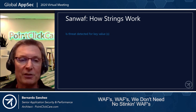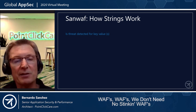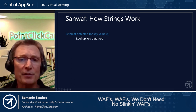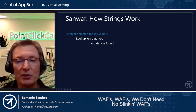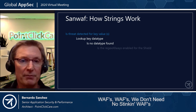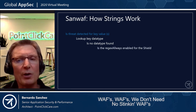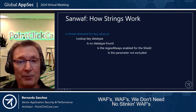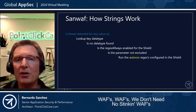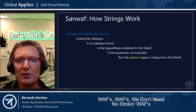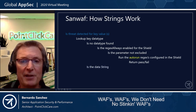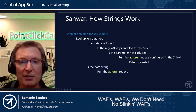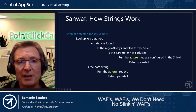For strings specifically: we look at the data type. If no data type is found for a non-secured parameter, cookie, or header, it checks whether regex is always enabled for this shield. If so, and you're not on the excluded list, it runs all auto-run regexes configured in the shield and returns pass/fail. If it is the string data type, it simply runs all auto-run regexes and returns pass or fail.